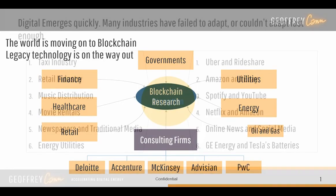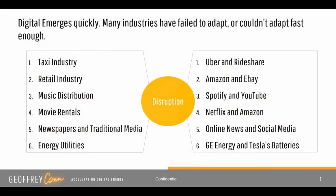Word of warning: many industries have thought they were immune to technology innovations that wouldn't affect them. The taxi industry thought that. A taxi plate in New York City was worth a million dollars two years ago — today it's worth $50,000. Uber has completely transformed how companies think about the taxi industry.